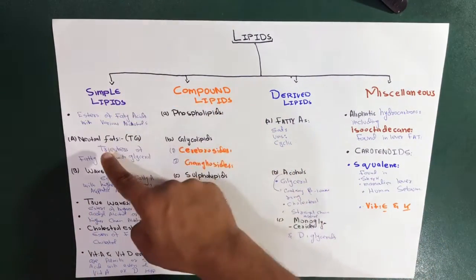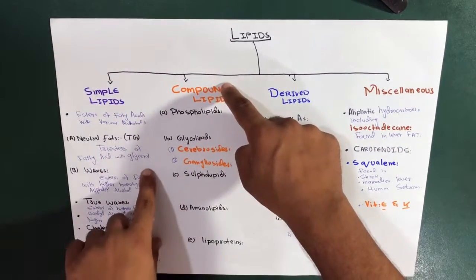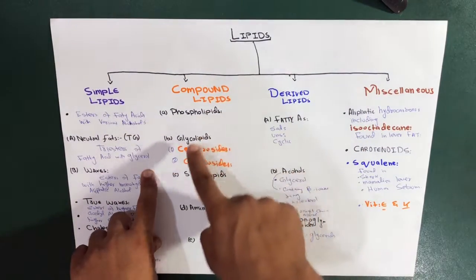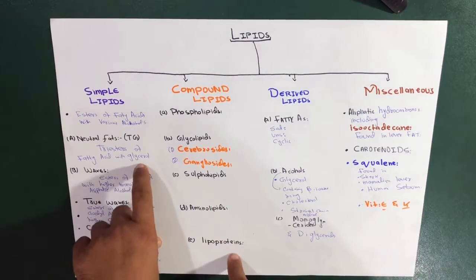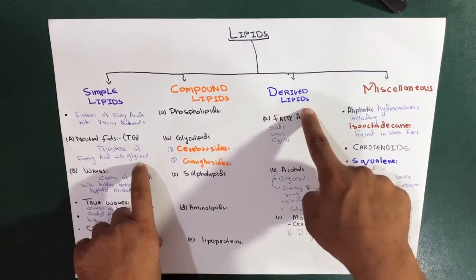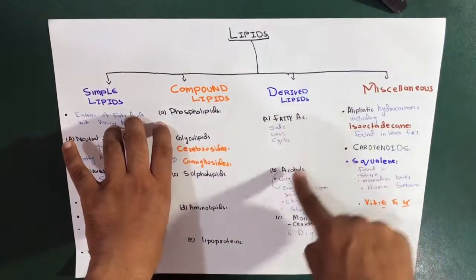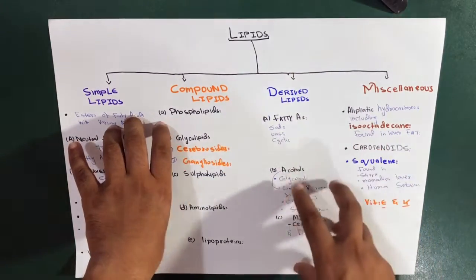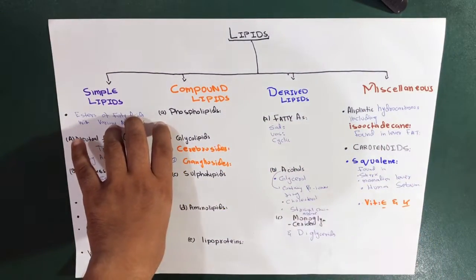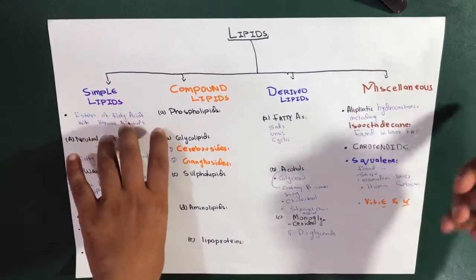Simple lipids are divided into neutral fats and waxes. Compound lipids are divided into five groups: phospholipids, glycolipids, sulfolipids, aminolipids, and lipoproteins. Derived lipids, which are derived from these, include fatty acids, alcohols, and monoglycerides.